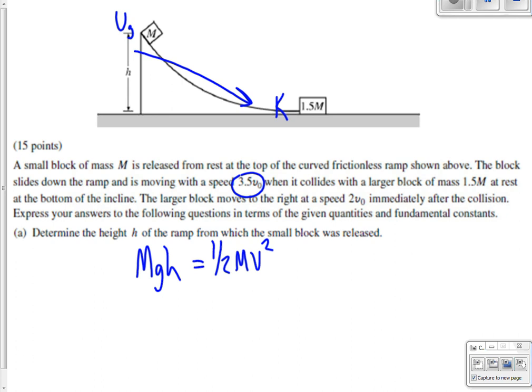Our mass will cancel out here. So that gives us v is the square root of 2gh. Hold on. Back it up. Solving for the wrong thing. We're solving for h here. So h is equal to v squared over 2g. Let's put in the right v. So 3.5 v initial squared over 2g.